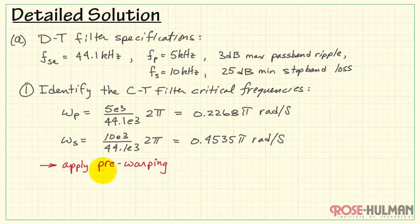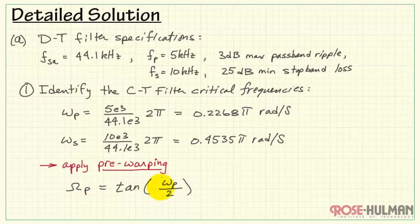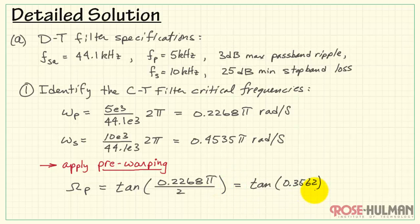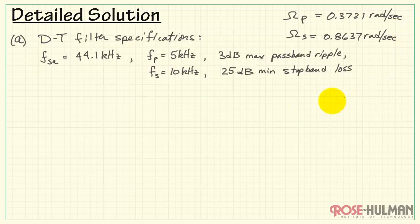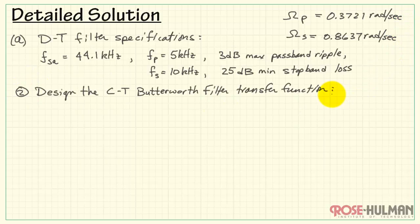Now we apply the pre-warping step, invoking the bilinear transformation to get the correct continuous-time equivalent frequencies. Capital Omega_p, the continuous-time passband frequency, equals the tangent of the discrete-time passband frequency divided by 2, which works out to 0.3721 radians per second. Similarly, the stopband frequency based on little omega_s works out to 0.8637 radians per second. We'll be using those values later on.